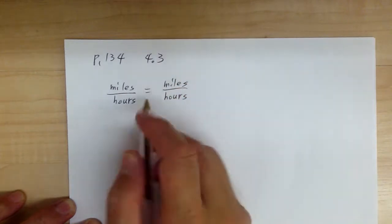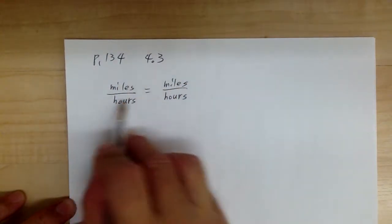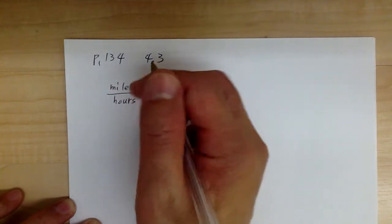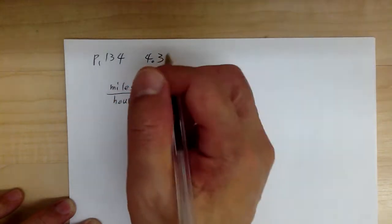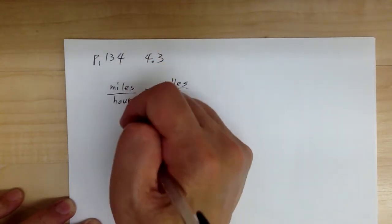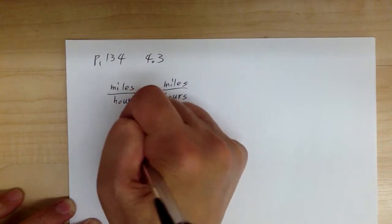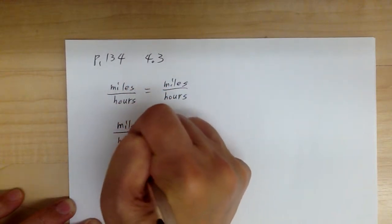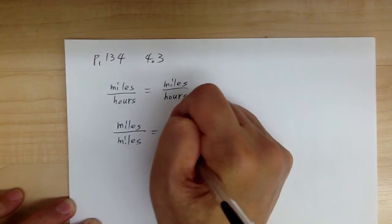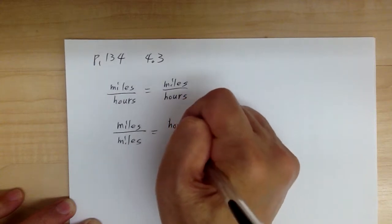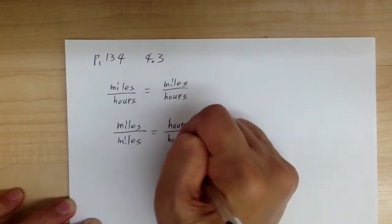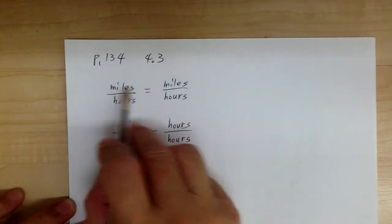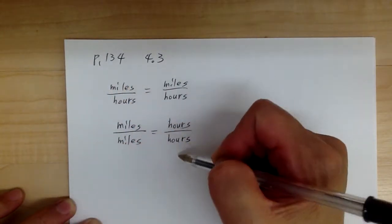Can you see the label? It lines up this way. Or you can line up vertically. For example, you can have the miles over miles, equal to the hours over hours. So you notice, you can line up this way, or you can line up the label this way.